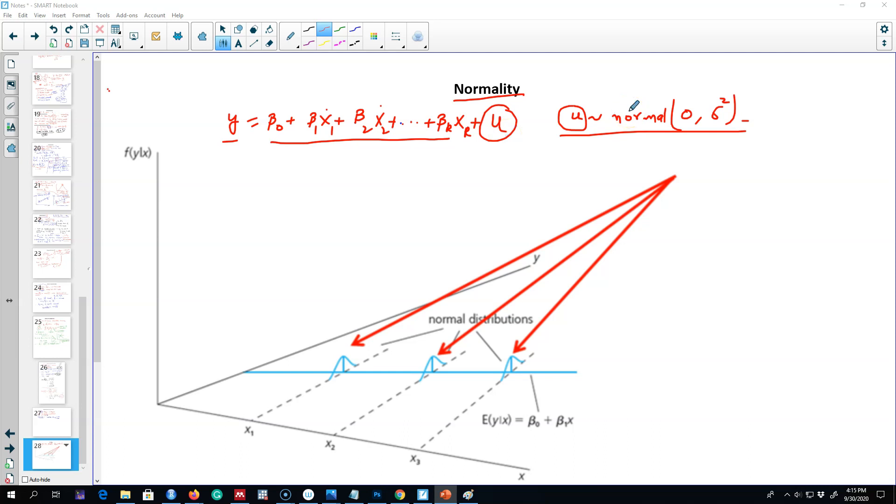There are two points I want to make about the normality of this error term. First, normality is an empirical question. Second, even if this error distribution is not normal, it should be close to normal. In some cases, the normality of this error term u cannot be established at all.